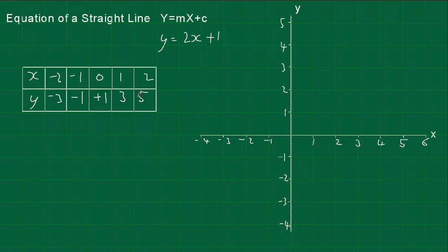Let's plot these and see how they look. So the first pair is minus 2, minus 3. Next one's minus 1, minus 1. Zero and plus 1, so that's here. Then we've got 1 and 3, and then the last one, 2 and 5.